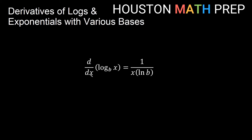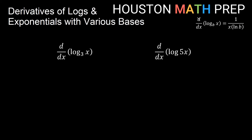Now, the derivative with respect to x of log base b of x equals 1 over x divided by ln of b — written as 1 over (x times ln b). Notice: with derivatives of exponentials we multiplied by ln of the base, but with derivatives of logs of some base we divide by ln of the base. That has to do with the fact that logs and exponentials are inverses of one another, so we get that reverse pattern. The derivative of log base 3 of x is 1 over x, divided by ln 3 — so 1 over (x times ln 3).